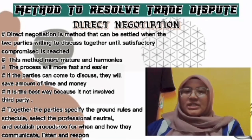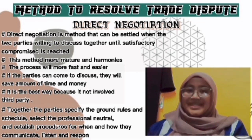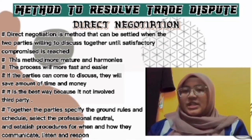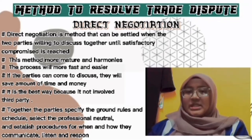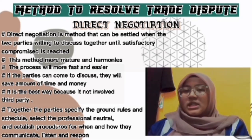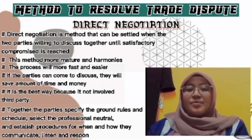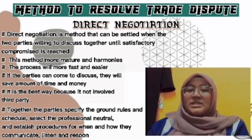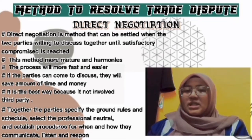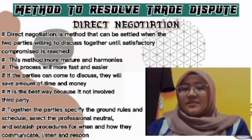The first method that can be used to resolve a trade dispute is direct negotiation — a method whereby the two parties involved are willing to come together for discussion until a satisfactory compromise is reached. It is the best way to resolve disputes because it does not involve a third party and does not make the problem worse. This method is more mature and harmonious, as the two parties meet and discuss face to face and solve the problem without using a third party such as law or an agency.